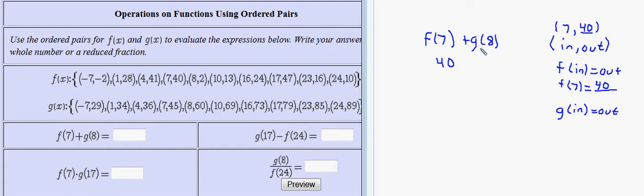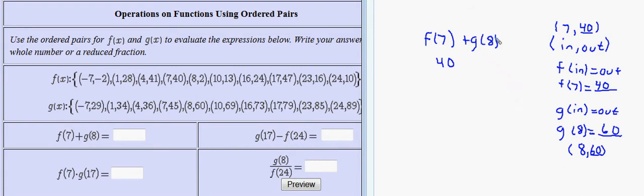Then we're asked to add whatever we get when we do g of 8. So let's do g of 8 — g of input equals output shows that g of 8 says you're given the input 8, please find the output. So in terms of a point, since the first coordinate is always the input, I'm looking for a point 8 comma something. Be careful to go to g and not f, and look for the point where 8 shows up as the first coordinate, not the second. I see the point 8 comma 60, so g of 8 is 60. Going back up and replacing g of 8 with 60, since we're adding, we have 40 plus 60 equals 100. So f of 7 plus g of 8 is 100.